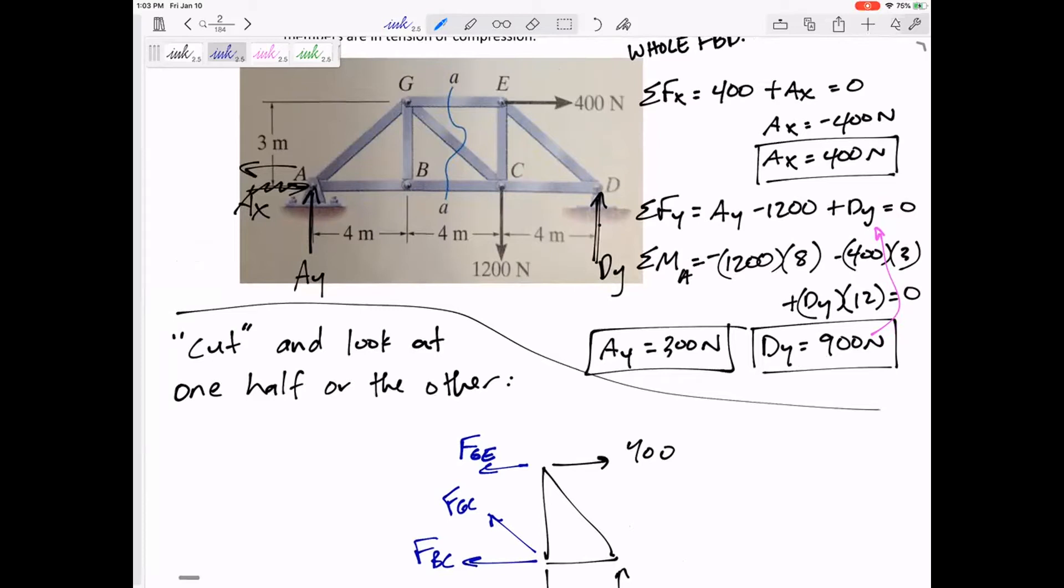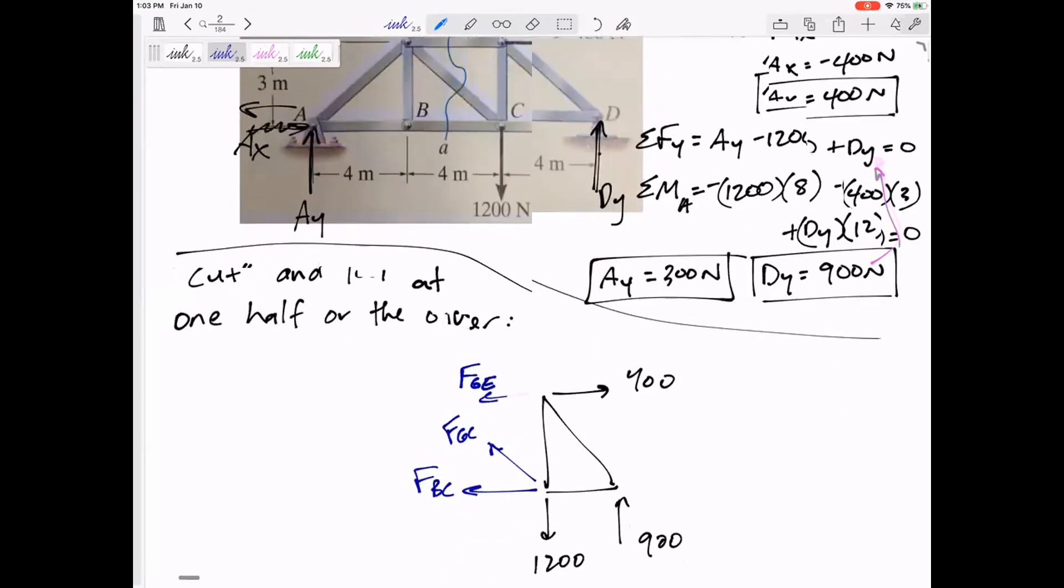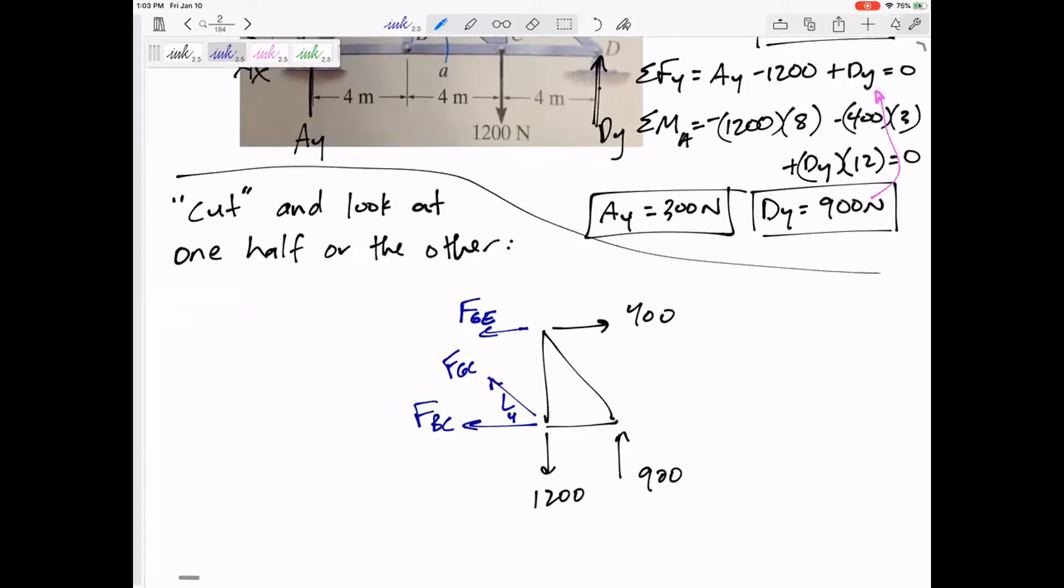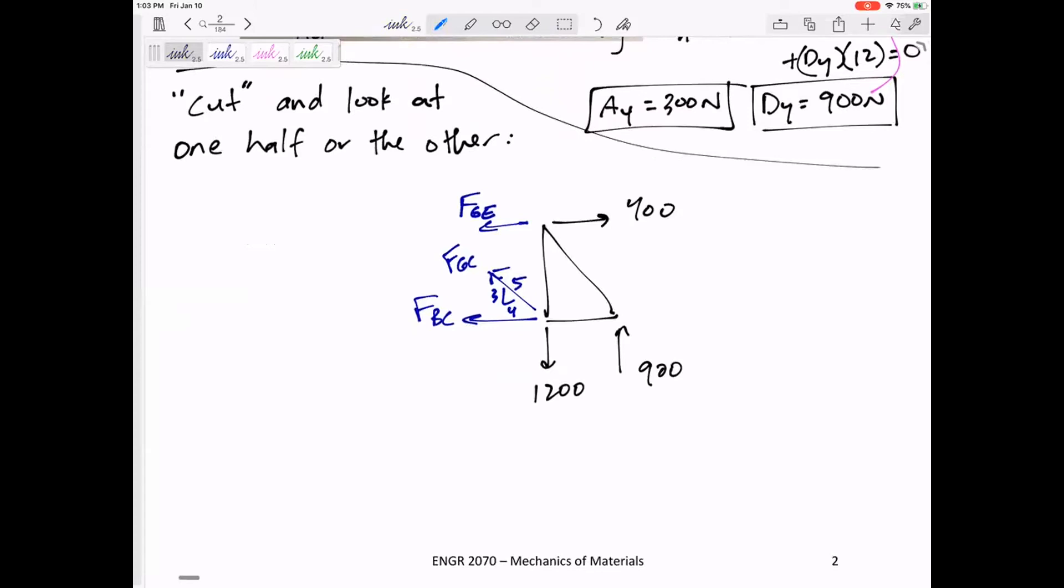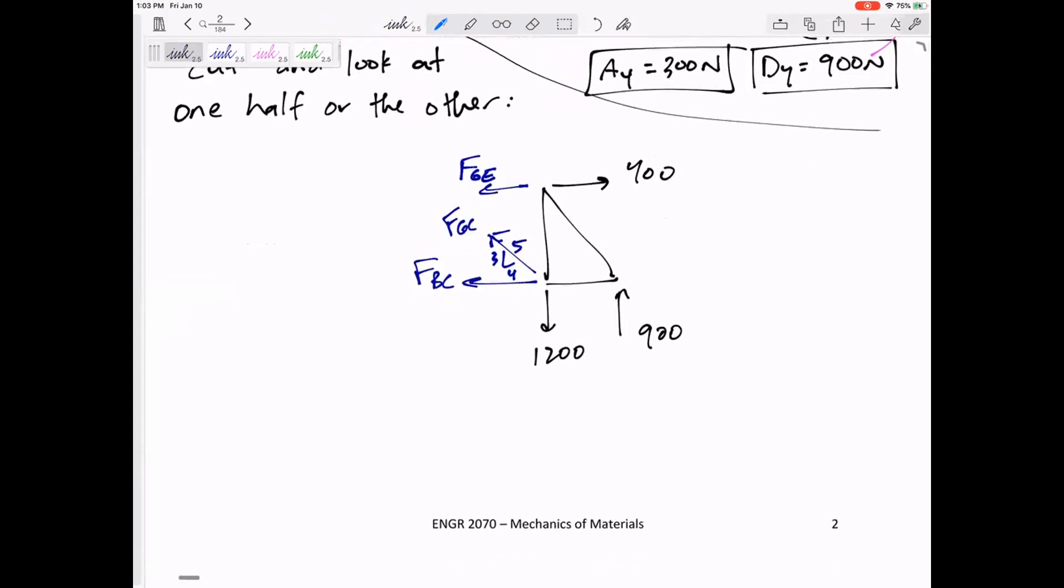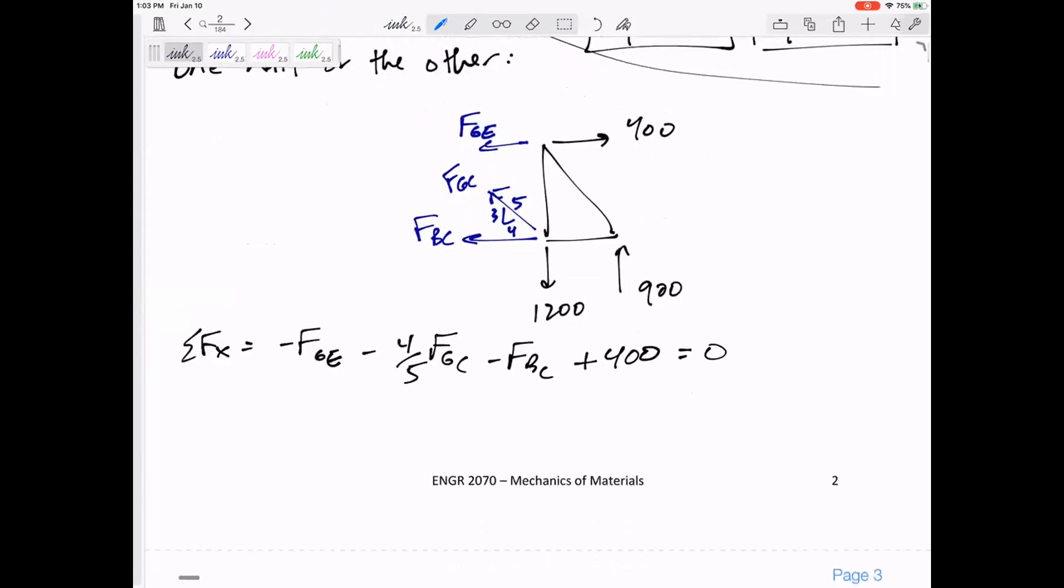I know that this one is at a four-three-five angle. Then I would generally have three unknowns and three equations. I could sum the forces in the x direction: negative FGE, negative four-fifths FGC, negative FBC, plus 400 equals zero. Sum of the forces in x equals zero. Sum of the forces in y equals zero.